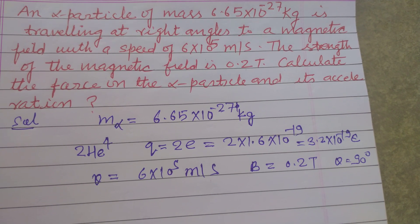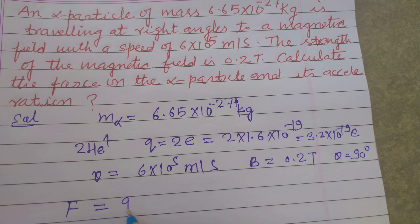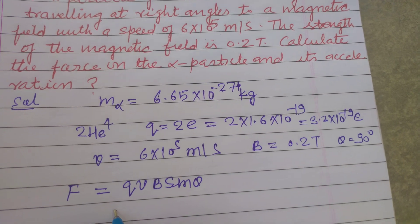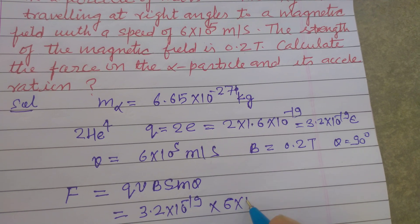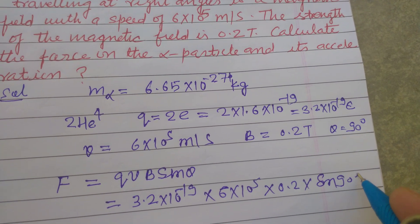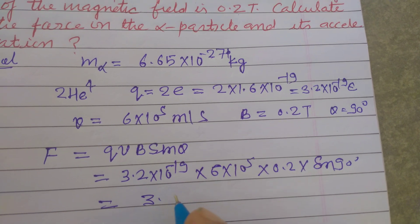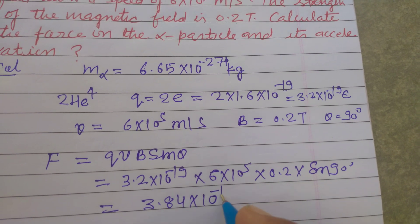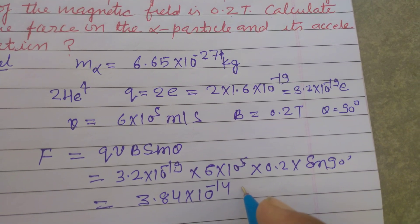So we use the force formula F = qvB sin θ. Here we substitute: 3.2 × 10^-19 for q, 6 × 10^5 for v, 0.2 for B, and sin 90°. On multiplication, we get 3.84 × 10^-14 Newtons.